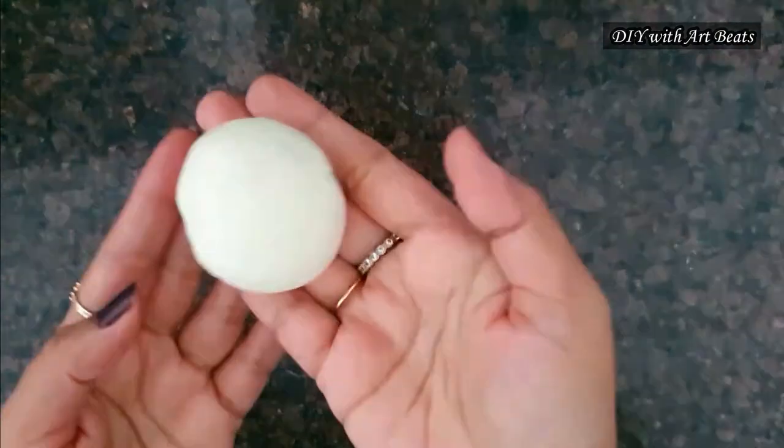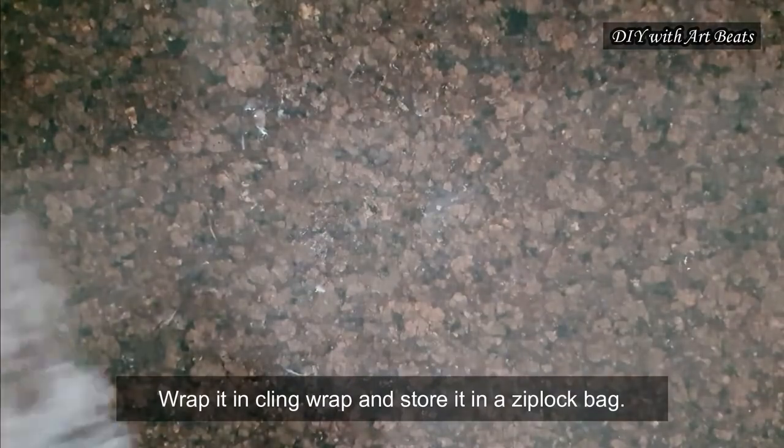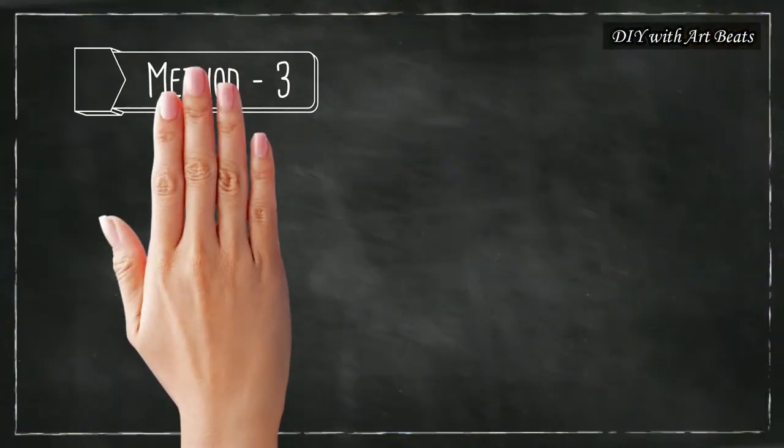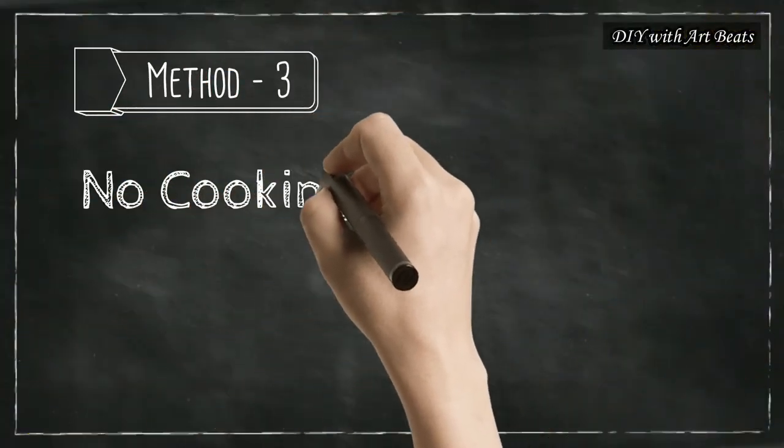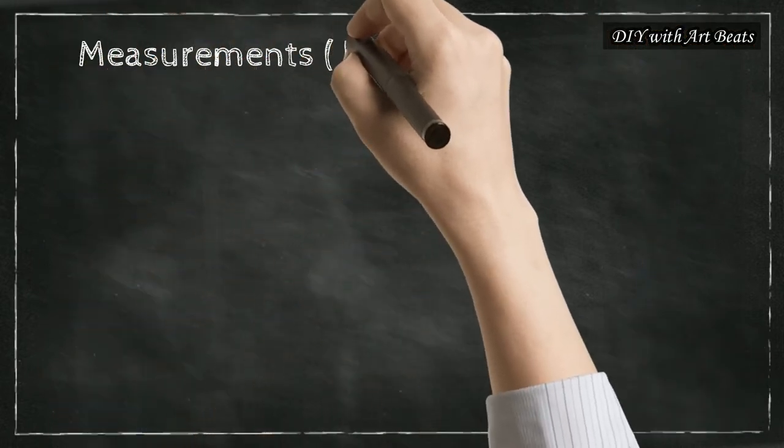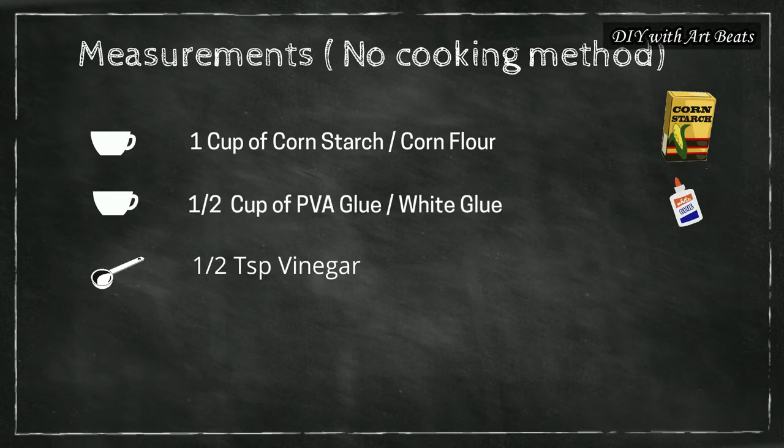When kneading is done, wrap it in cling wrap and keep it in an airtight container or bag. Now in our third method we will make air dry clay without cooking it. Here the measurements are little different. You can note this down.